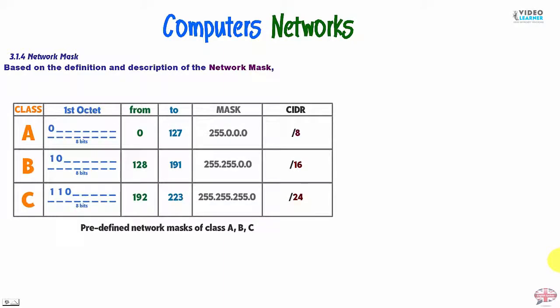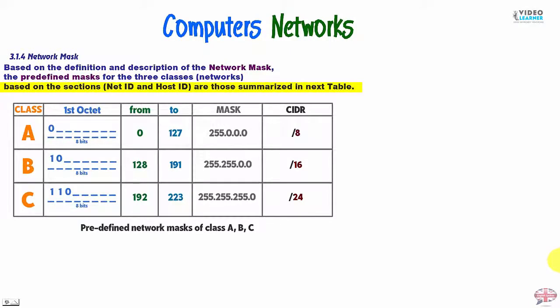Now have a look how Network Mask is used on classful networks. Based on the definition and description of the network mask, the predefined mask for the three classes networks based on the section NetID and HostID are those summarized in the next table. Here it is: Class A, B, C, and this is CIDR. So we have 8 digits in class A.